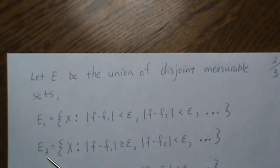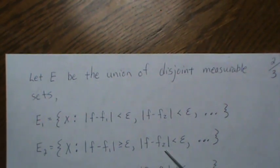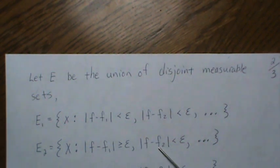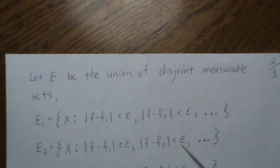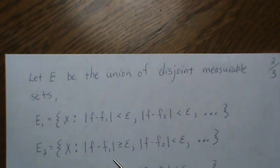So then E_2, it says that, you know, this F minus F_2 less than epsilon is the first, and of course all these are less than epsilon, but this one is greater than epsilon.